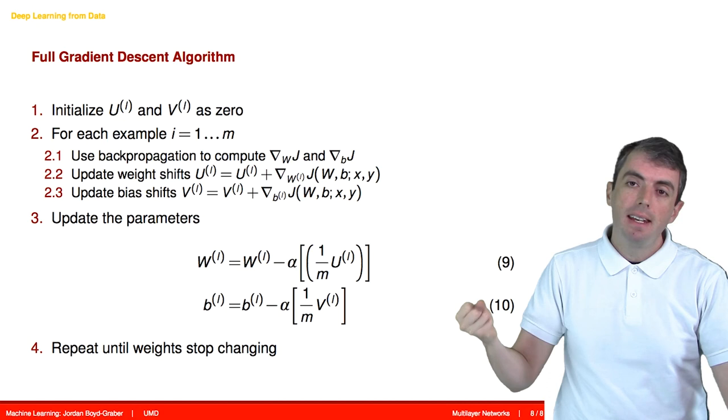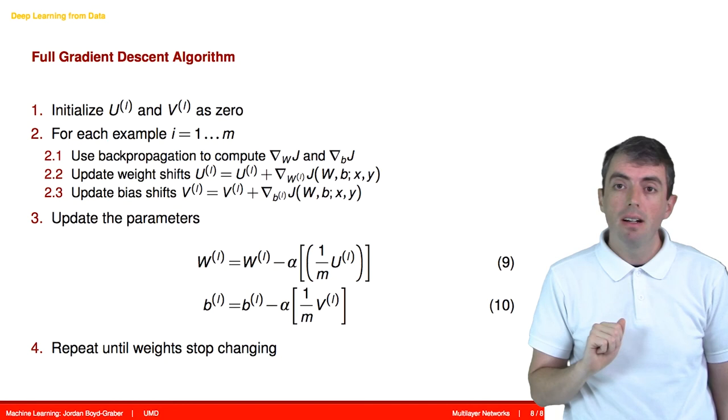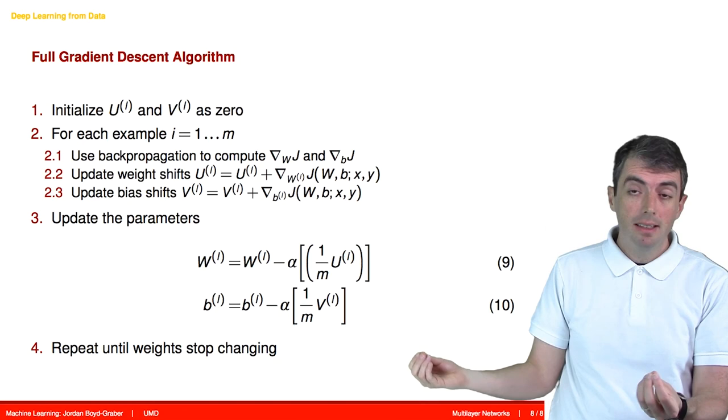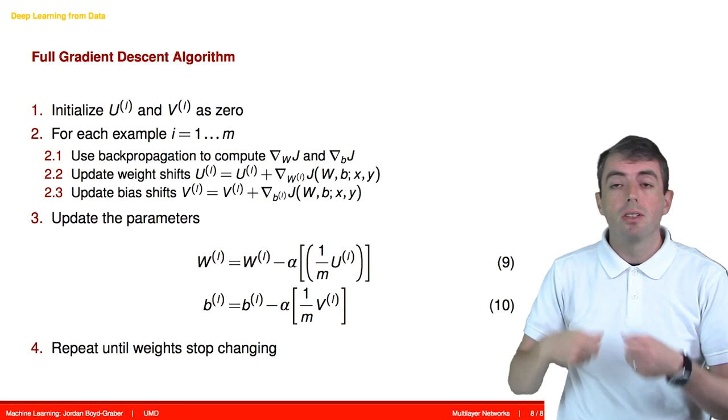We can do this either for individual examples and do stochastic gradient descent, or we can do it for the entire data set and do regular gradient descent. In either case, you're going to take some set of examples, perhaps the entire data set, compute up the individual gradients.